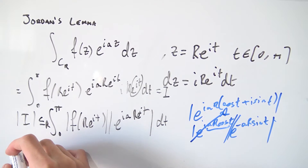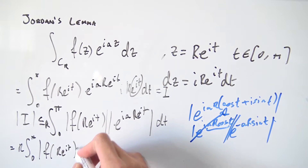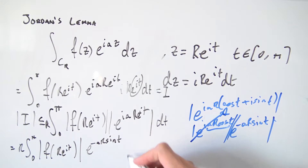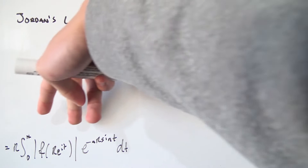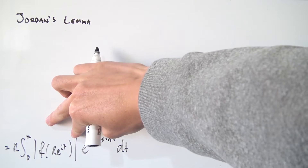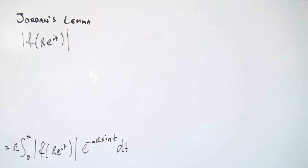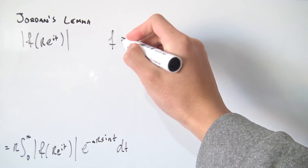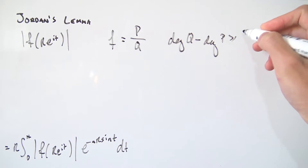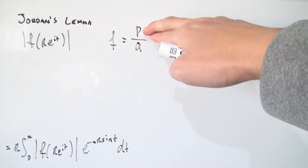We can rewrite the whole integral by replacing the exponential chunk with e^(−ar sin t). So we now have r times the integral from 0 to π of |f(re^(it))| · e^(−ar sin t) dt. From here we want to further estimate the integral by finding an upper bound for |f(re^(it))|. Remember from the start that f(z) = p(z)/q(z), where deg(q) − deg(p) ≥ 1.